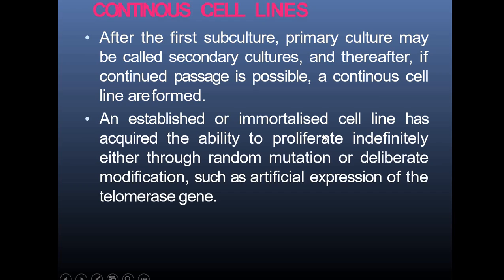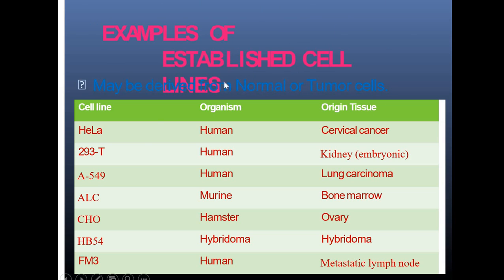After the first subculture, primary culture may be called secondary culture, and if continuous passage is possible, a continuous cell line is formed. An established or immortalized cell line has acquired the ability to proliferate indefinitely either through random mutations or deliberate modification such as artificial expression of telomerase. Examples of established cell lines include HeLa, HEK293, Jurkat, A549 lung carcinoma, ALC from bone marrow, CHO ovary cells, and FM3 from metastatic lymph nodes.